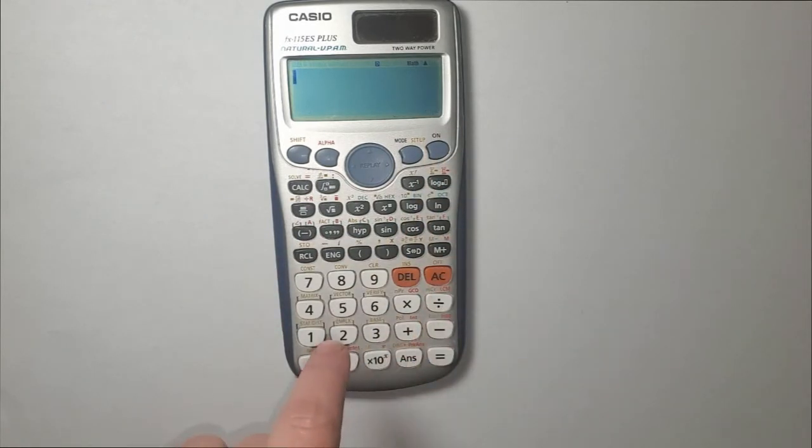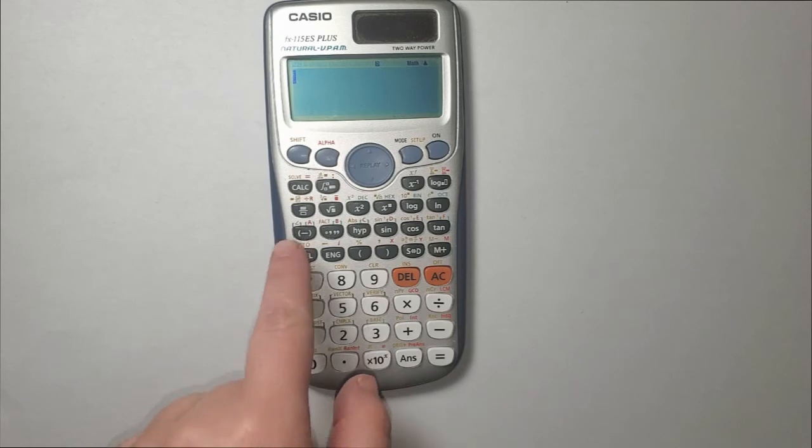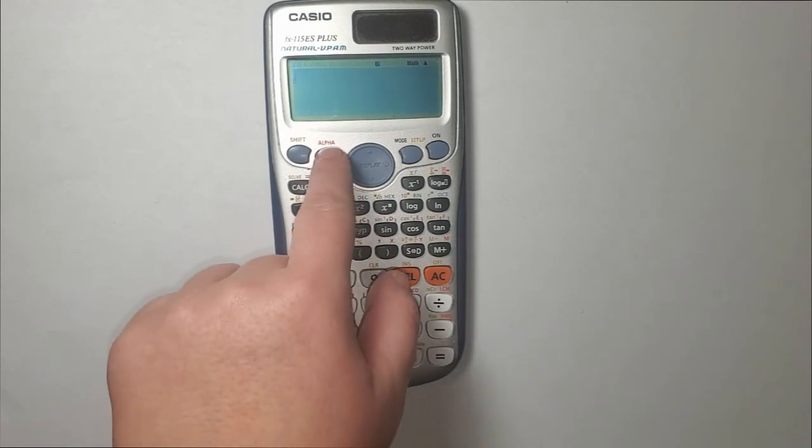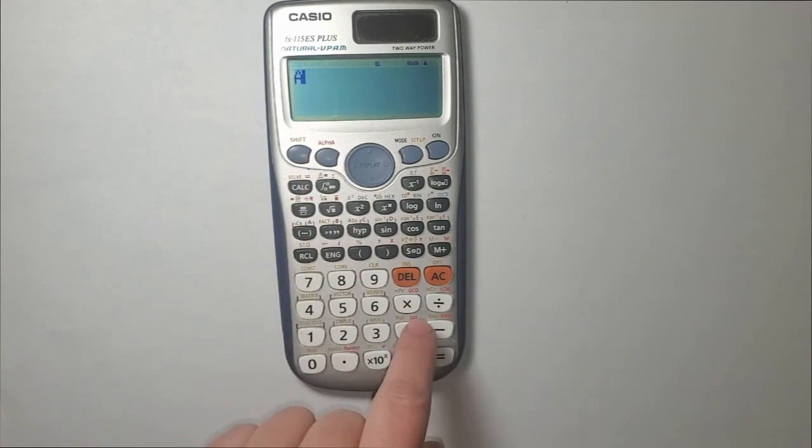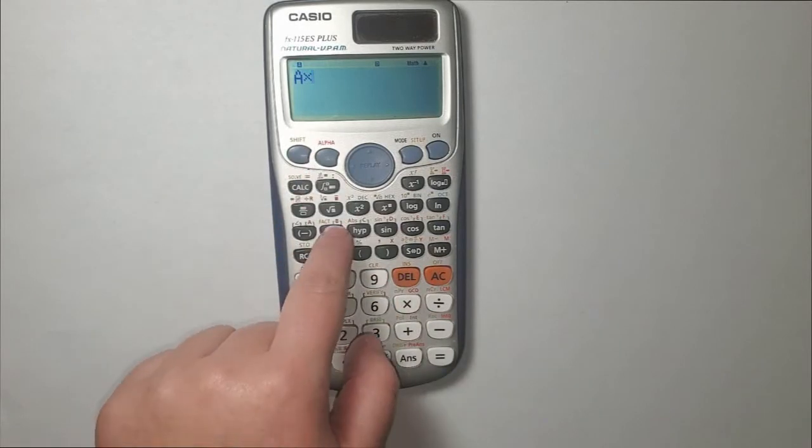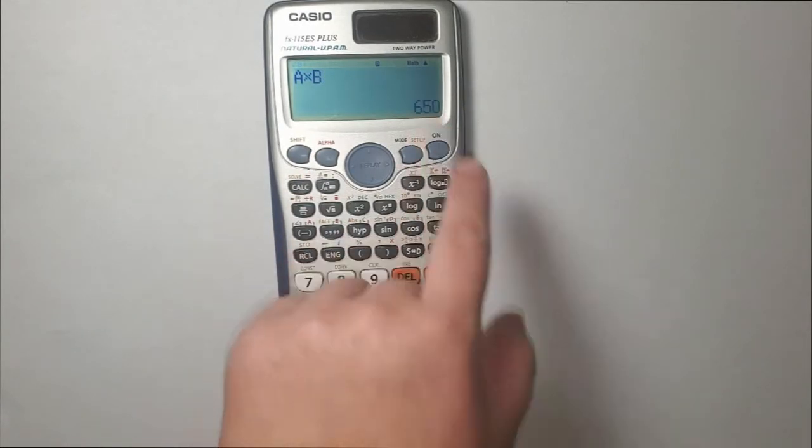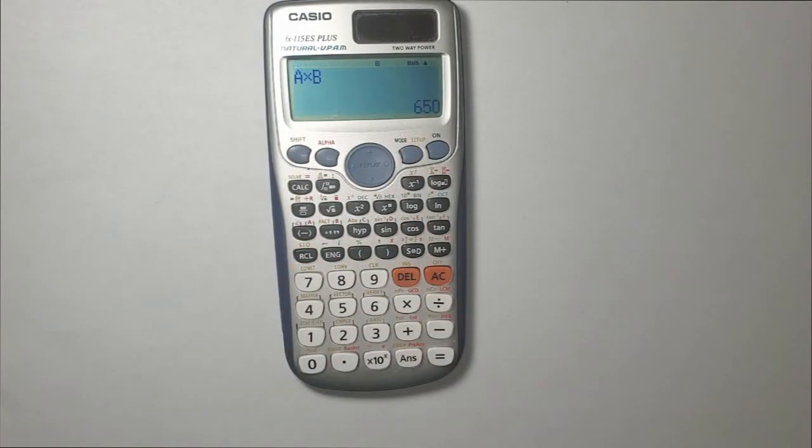Now if I want to multiply variable A and variable B, I go alpha A times alpha B equal. Here it is, 650. So basically we can store different values or calculation results to each of these variables.